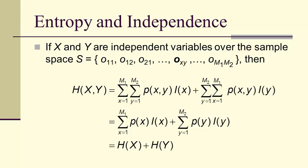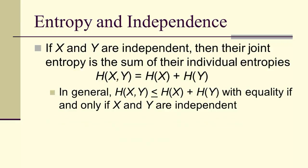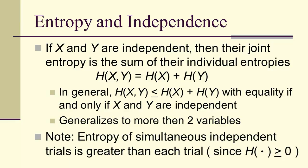If we have independent variables, then the entropy, the joint entropy of X and Y is equal to the sum of the entropies. So if X and Y are independent, then their joint entropy is the sum of their individual entropies. In general, the sum of the individual entropies is only an upper bound. And this generalizes quickly or easily to more than two variables. Notice that that means that the entropy of simultaneous independent trials is greater than each trial. So in other words, if we do an experiment more than once, then we'll have more entropy than if we just did the experiment once, if the outcomes of the trials are independent.